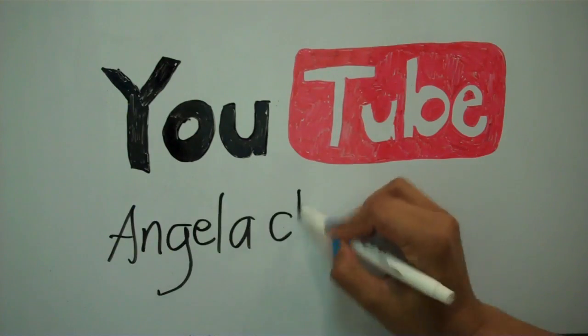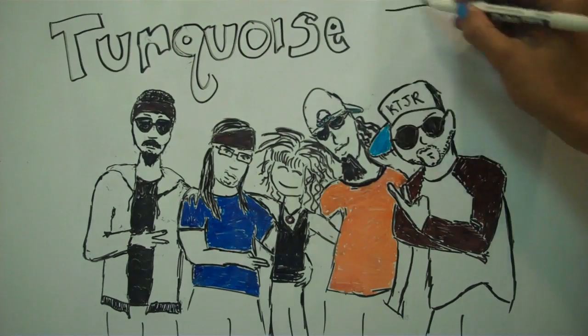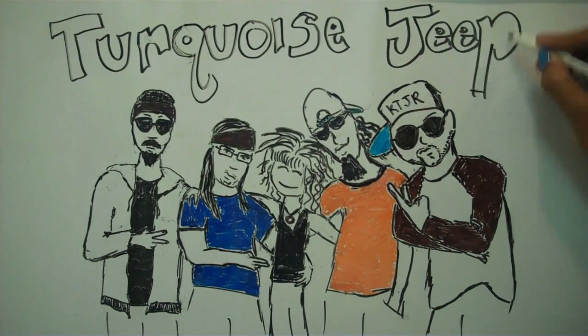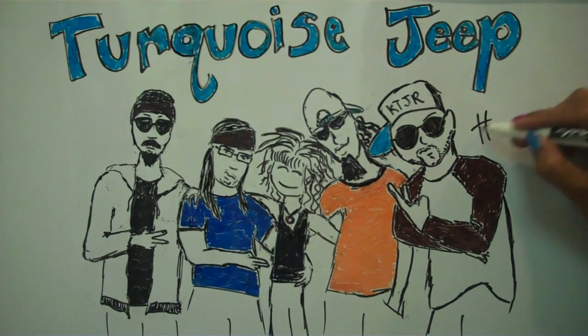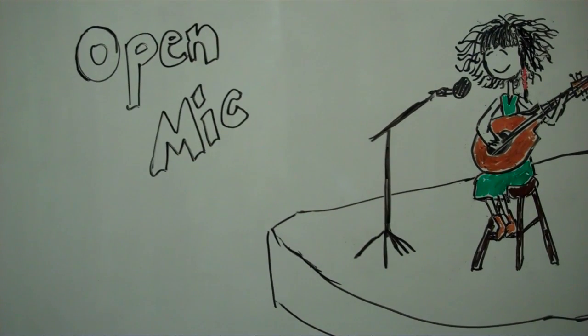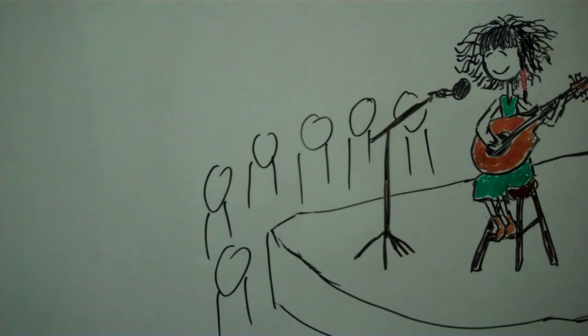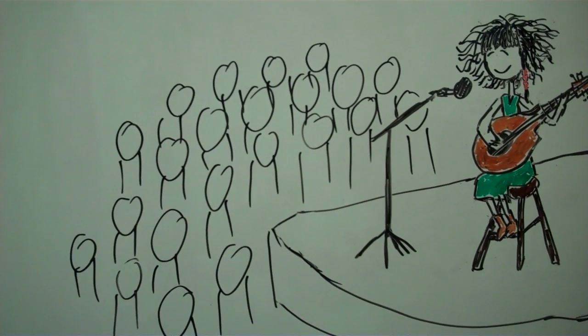And one night I went to Ottobar in Baltimore, and Turquoise Jeep from the YouTube stars were performing there. It was so fun. Afterwards, they talked to me. I told them about my series. Young Humma requested that I do one of their songs. I did it. They loved it. I was like, wow, I felt alive again. And so I started playing live. So many open mics. And I met so many musicians and photographers and live local music facilitators.